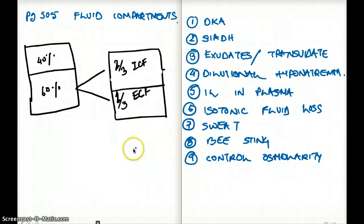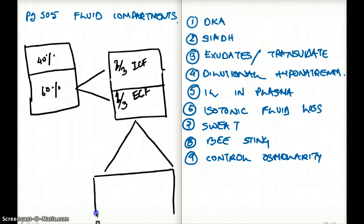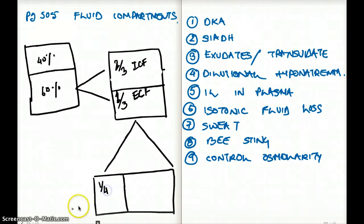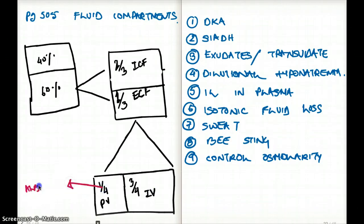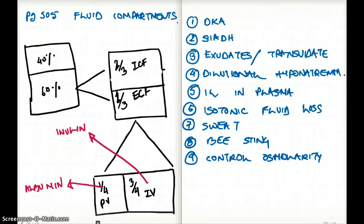The extracellular fluid is further divided into plasma volume and interstitial volume. Plasma volume is one-fourth and interstitial volume is three-fourths. Plasma volume can be measured with albumin, and interstitial volume can be measured with inulin. In exam questions, extracellular and intracellular fluid are most commonly tested.